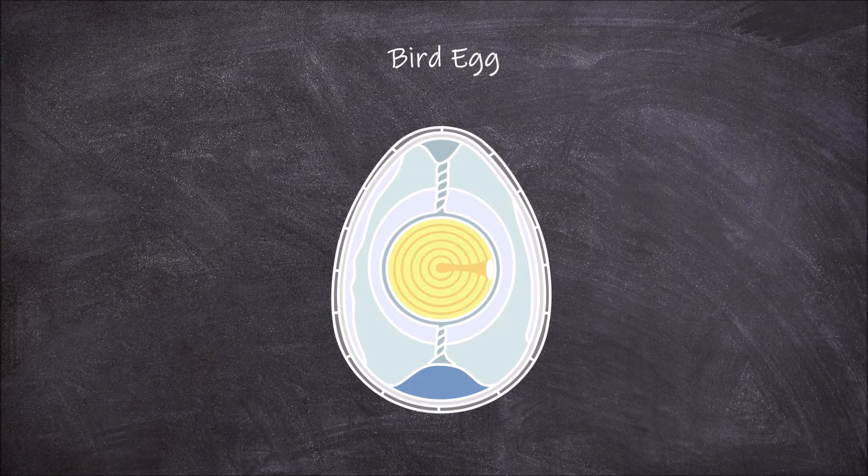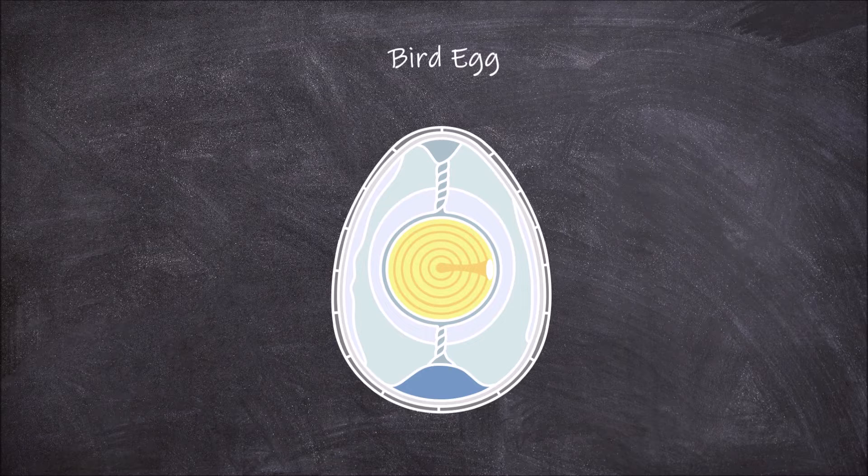As part of the process of reproduction, female birds form eggs internally within the oviduct before they are laid into a nest. This egg may or may not have been fertilized before being laid.